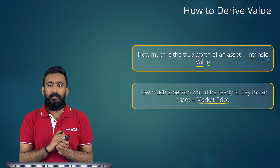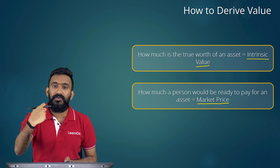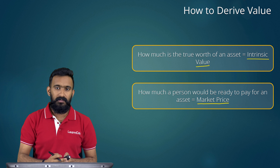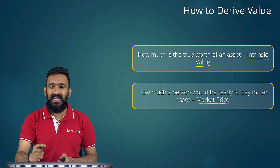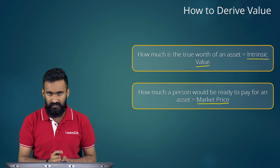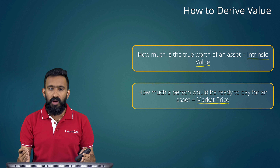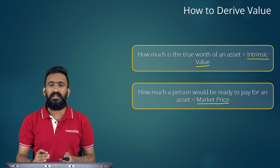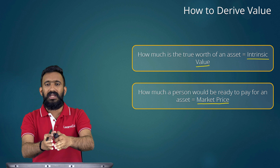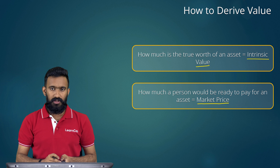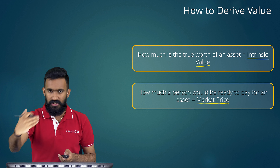Market price could be different from intrinsic value. What a person is ready to pay for a particular asset is called the market price. So what you are going to pay is the market price, and what you really get is the intrinsic value or real worth of an asset. Both of these can be derived differently. Our assumption is that in the longer run, an asset that has a market price today would ideally move to converge to its intrinsic value in the future.